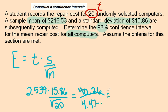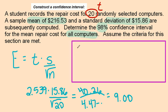When you do the division, your margin of error to match the standard deviation would be 9.00. Now let's go find x-bar, plus the margin of error, and minus the margin of error.